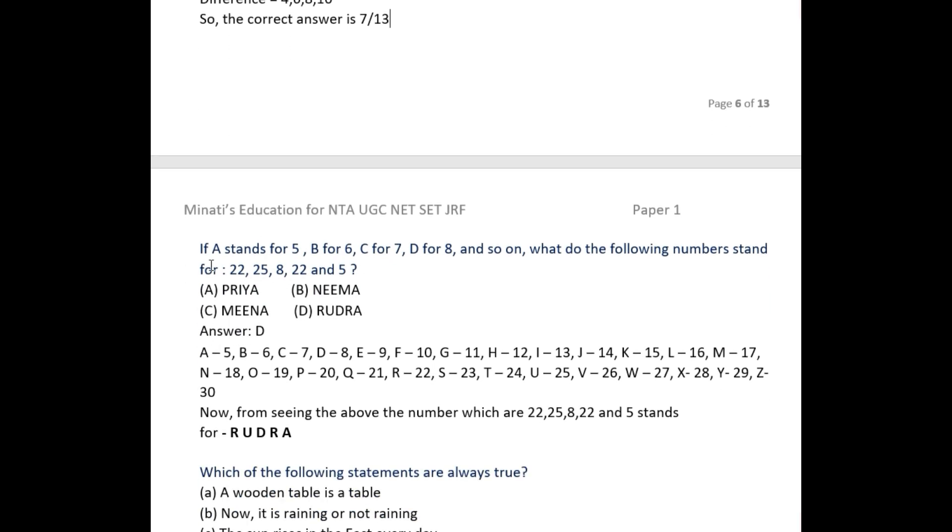Come to the next problem. If A stands for 5, B for 6, C for 7, D for 8, and so on, what do the following numbers stand for: 22, 25, 8, 22, 4, and 5? How to do these types of sums? A for 5, B for 6, C for 7, D for 8, up to Z. First you have to write all the alphabets.